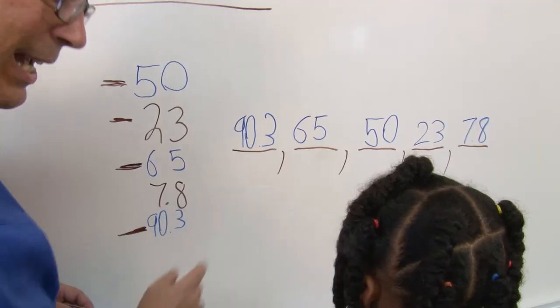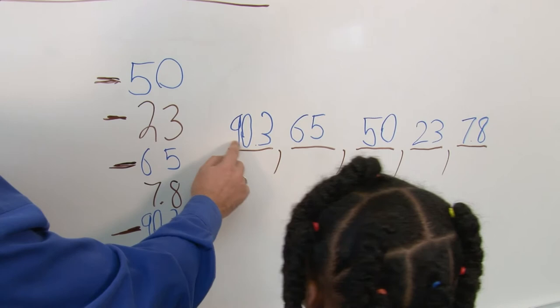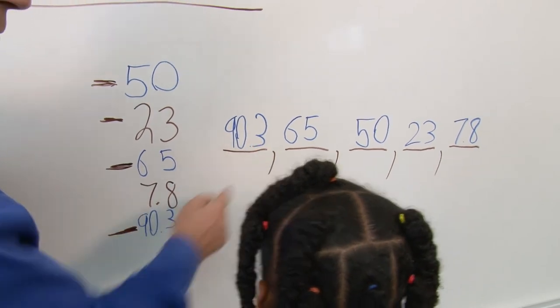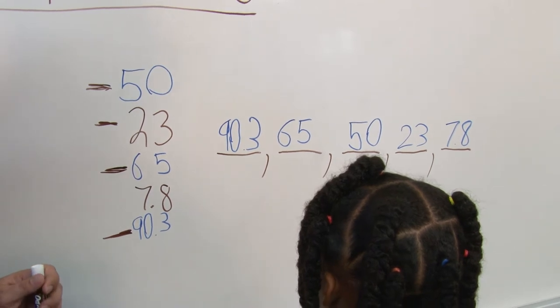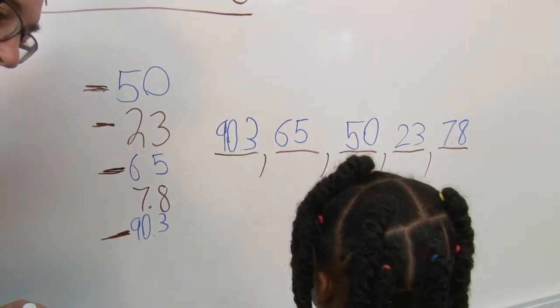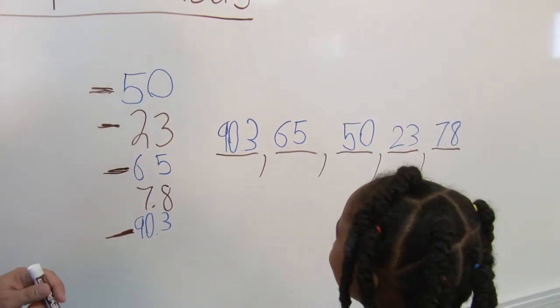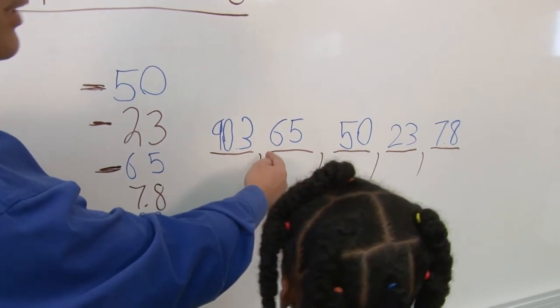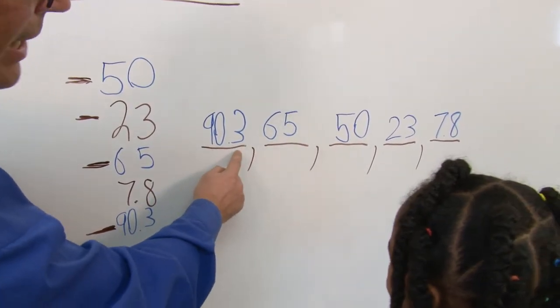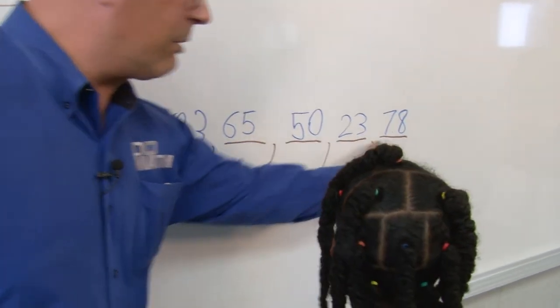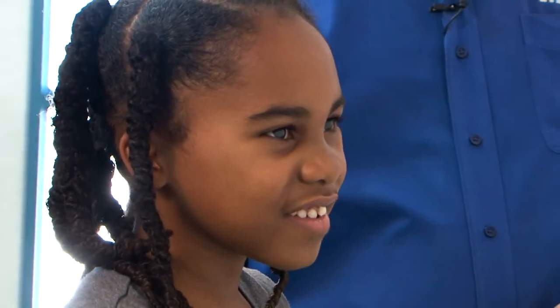And. Perfect. So, 90 and... Three. Three what? Three... Tenths. Tenths. Okay. Because the first place after a decimal point, the last part is going to be tenths. The next one would be hundredths. Alright? So, if this is 90 and three tenths, can you read the last one for me? Seven and eight tenths. Tenille? Nicely done.